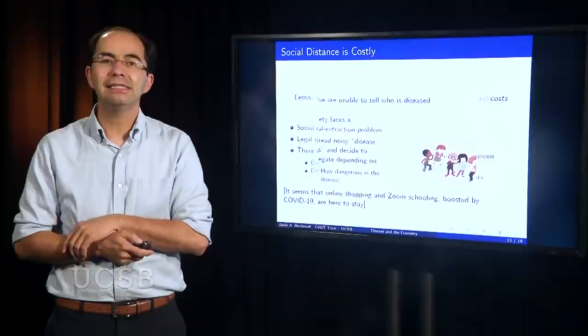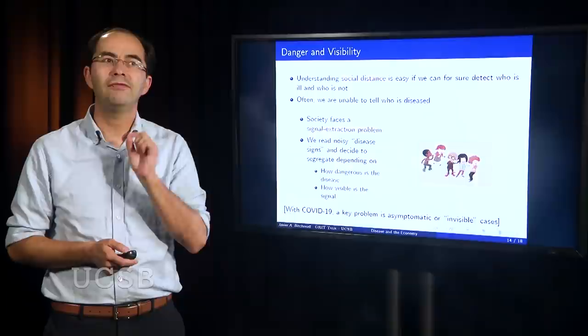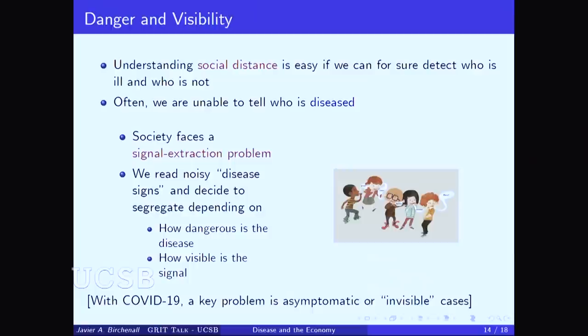My last lesson goes to just one final point, which is this. I have assumed in my made-up universe that I can clearly detect who is healthy and who's not. And introducing social distance in that world is very simple. Most of the time, we can't. It's very difficult to diagnose disease. And in fact, society faces what we call a signal extraction problem.